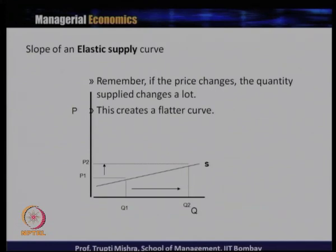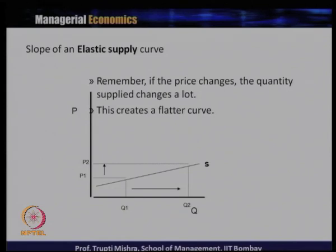Looking at the graph, Q is on the X-axis and P is on the Y-axis. Initially price is P1 and quantity is Q1. When price increases from P1 to P2, quantity supplied increases from Q1 to Q2, with a much greater change in quantity than in price. This means Q2 − Q1 is much greater than P2 − P1, confirming this is an elastic supply curve with a flatter shape.